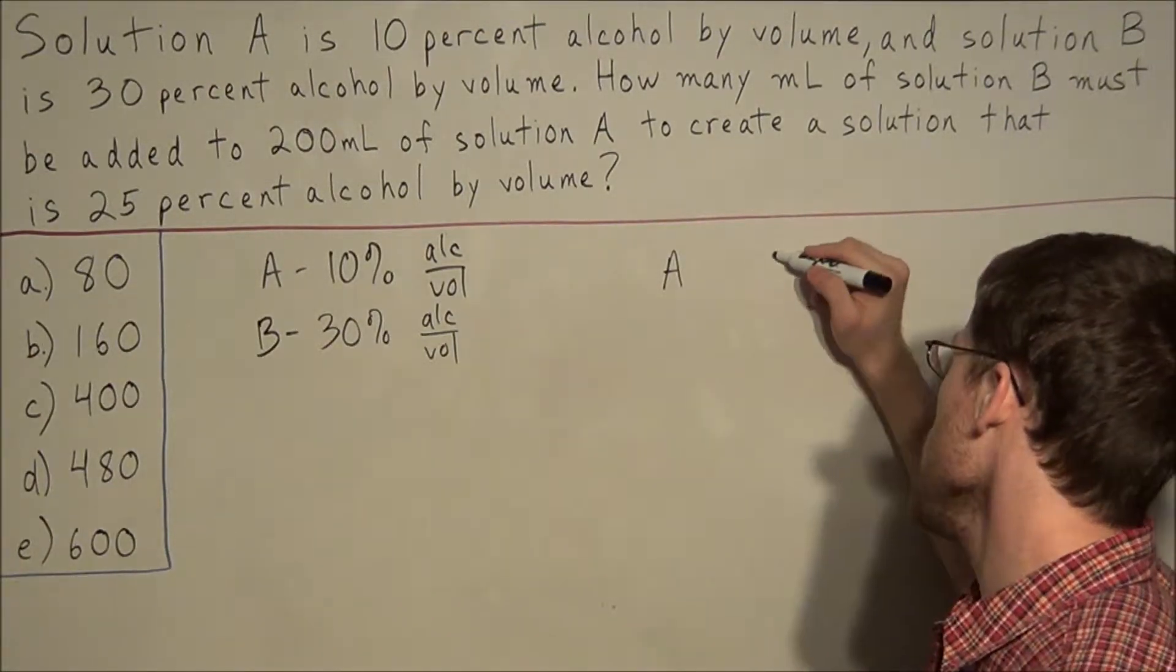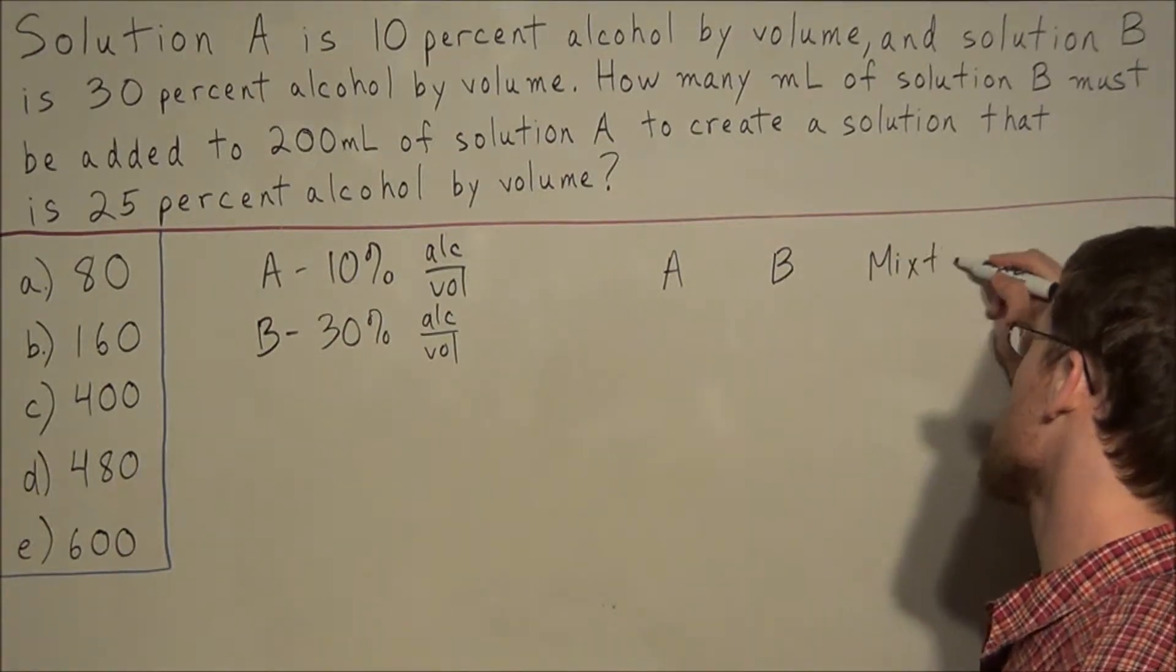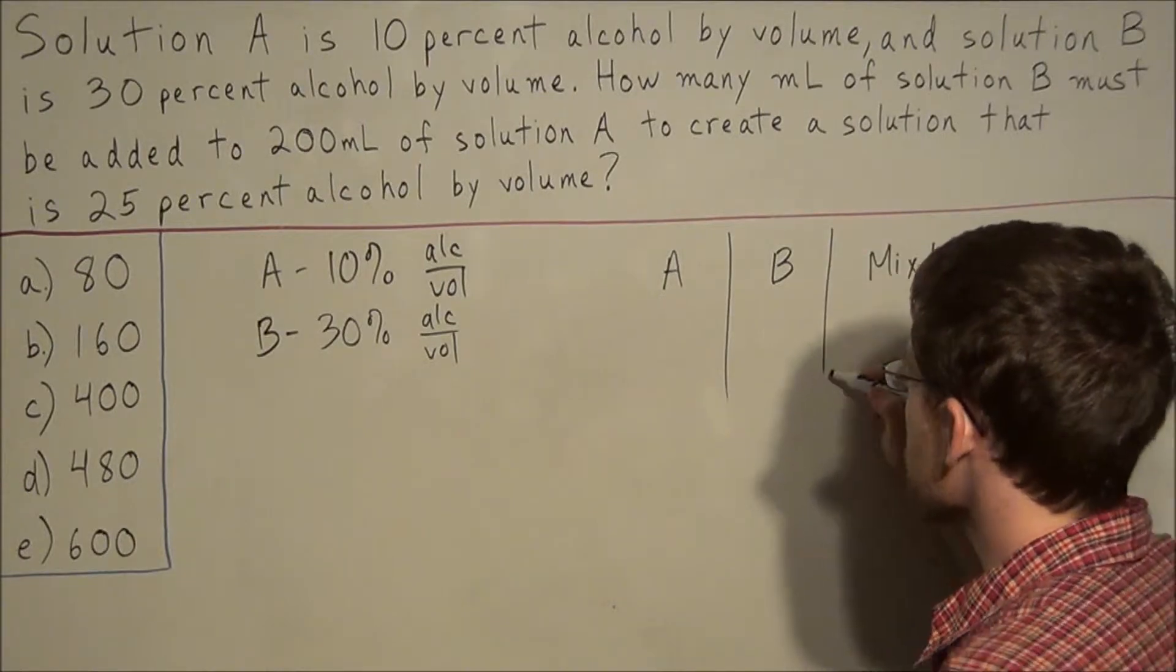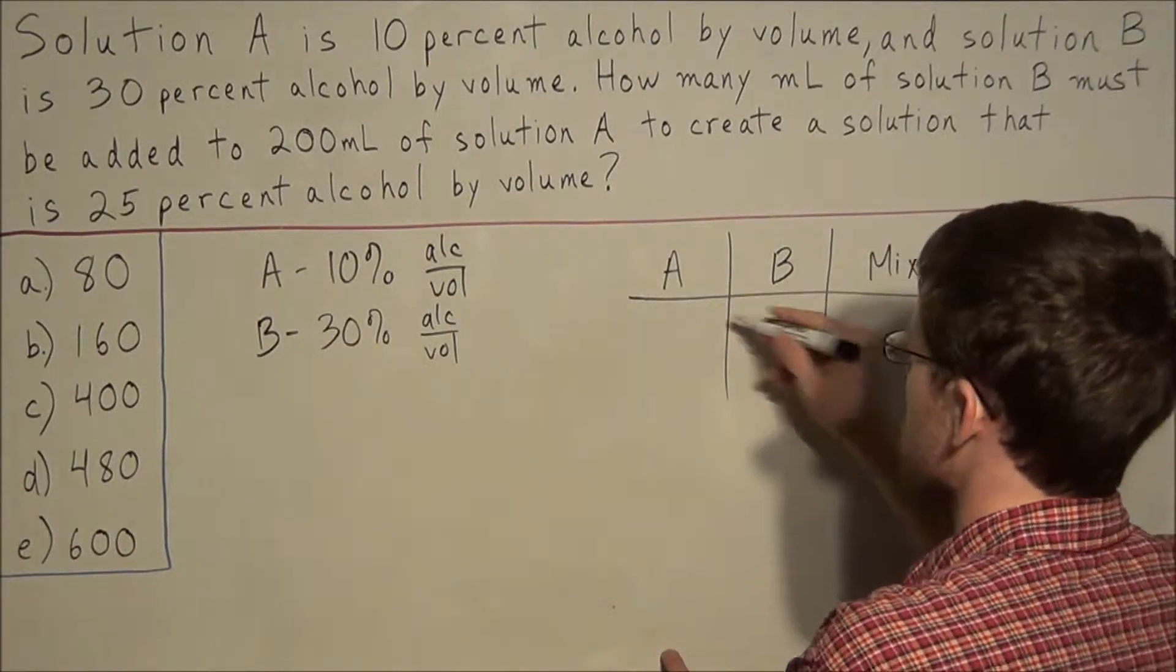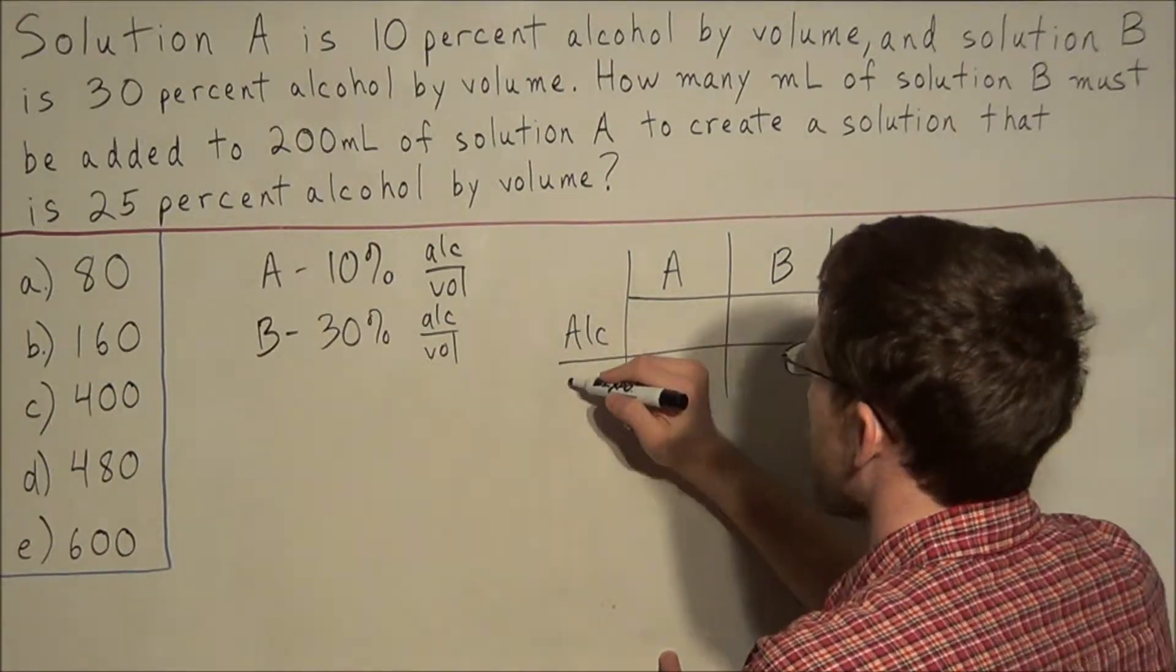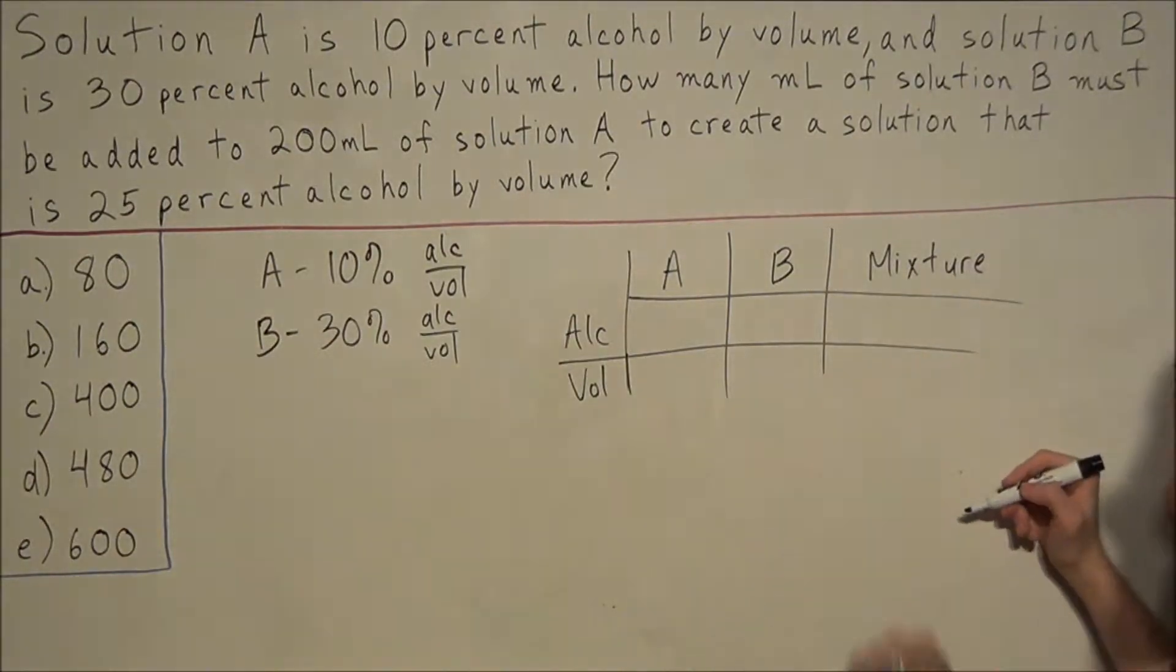We are looking at solution A, solution B and the mixture which is the end result of combining solution A and solution B. The two aspects that we are comparing is the alcohol content and the volume of each solution and the end mixture.